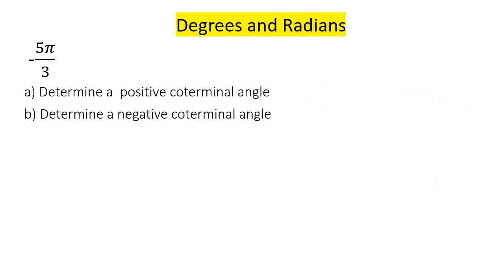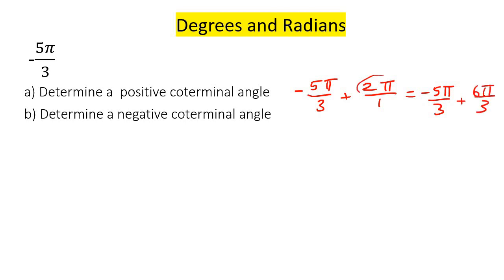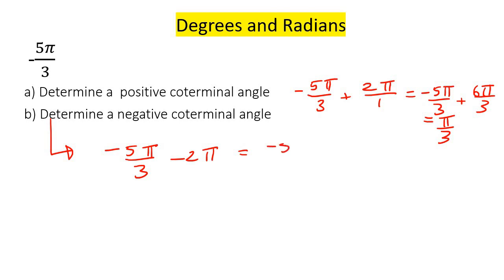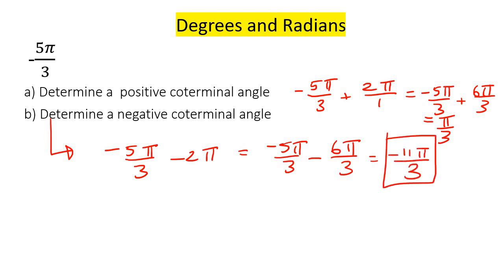Let's do one more example. Here we have a negative coterminal angle. To get a positive, we add 2 pi. With a common denominator: negative 5 pi over 3 plus 6 pi over 3, because I multiply by 3 on both sides. That gives us pi over 3. To do the negative one, we subtract 2 pi, and with a common denominator that gives us negative 11 pi over 3. And we'll see you next time.